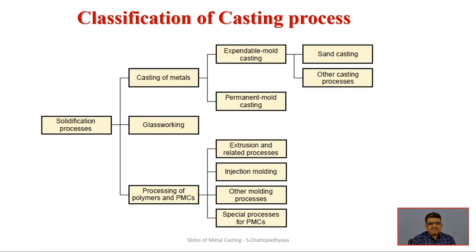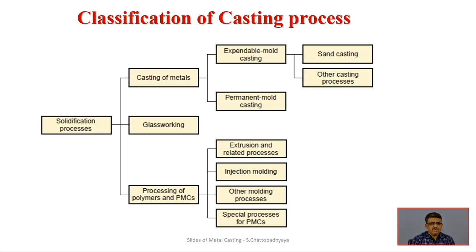The subdivisions of polymer processing include extrusion and related processes. Another very popular process is injection molding, by which many plastic components are produced. Many other special-purpose processes are associated with PMC — polymer matrix composites. These are extending their applications in many ways because of their versatility in terms of properties.